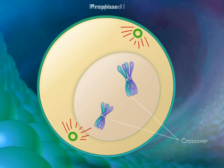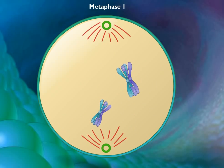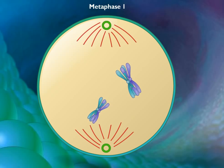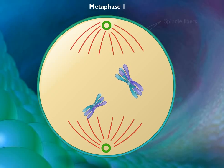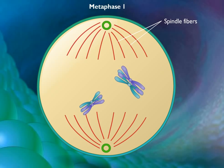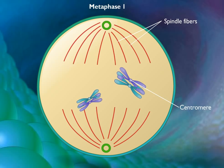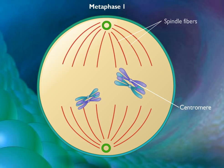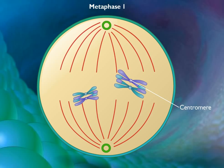By metaphase I, the nuclear membrane has disappeared and the microtubules form a spindle. Spindle fibers attach to only one side of each centromere, and the two homologous chromosomes attach to microtubules orienting from opposite poles.